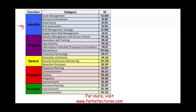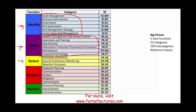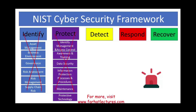We already completed the identify function and covered the six categories and subcategories. We looked at the protect function and covered the six categories and many subcategories. In this session we're going to be looking at the detect function, which will cover three categories. Overall we have five core functions, 23 categories, and 108 subcategories and many references. We already covered the identify and protect functions — now we're going to be covering the detect function.